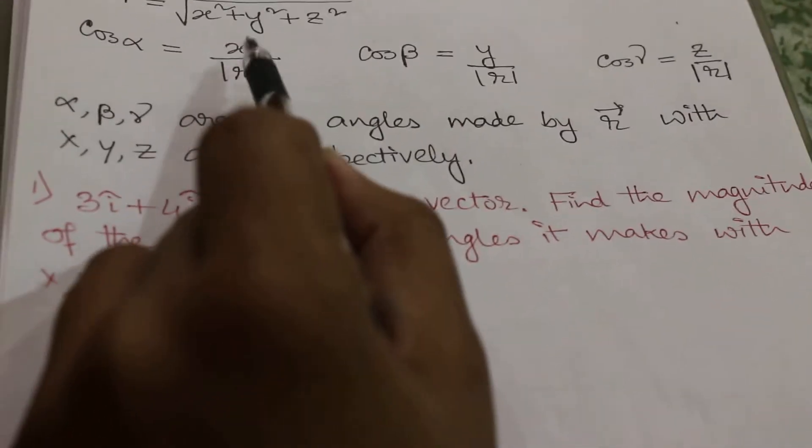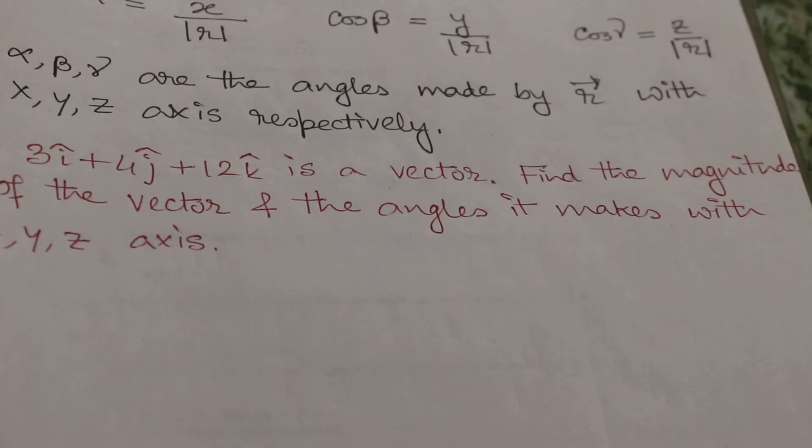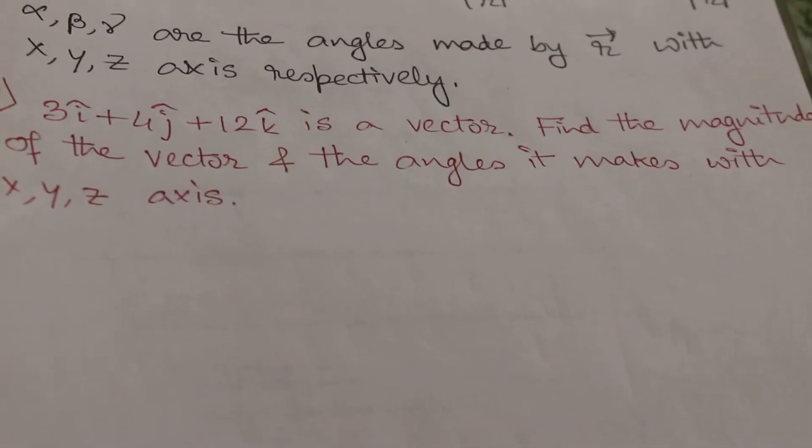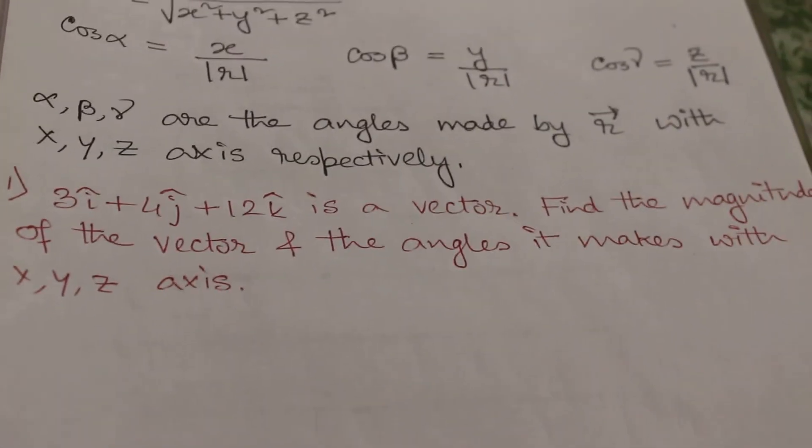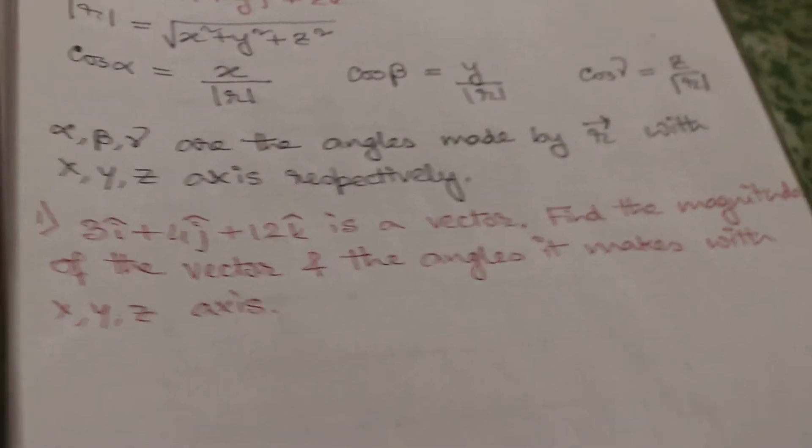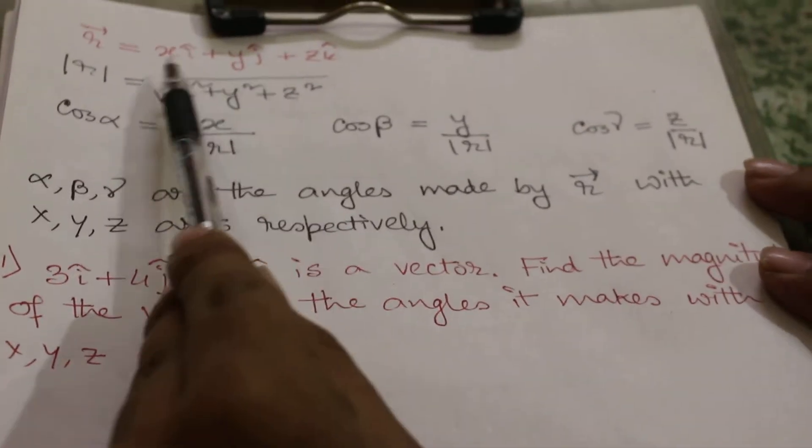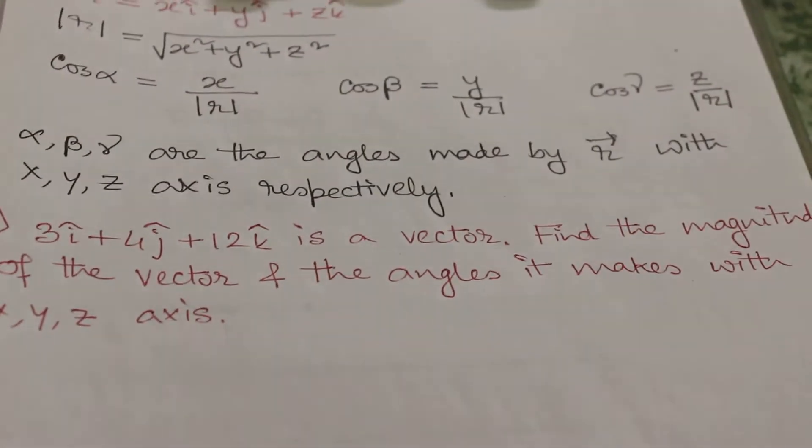So cos alpha equals x by mod of r vector. Cos beta equals y by mod of r vector, and cos gamma equals z by mod of r vector. Where x, y, z are the coefficients of i cap, j cap, and k cap respectively.